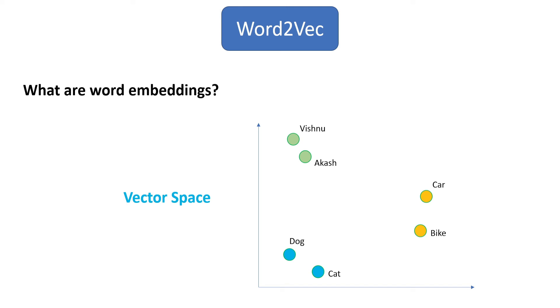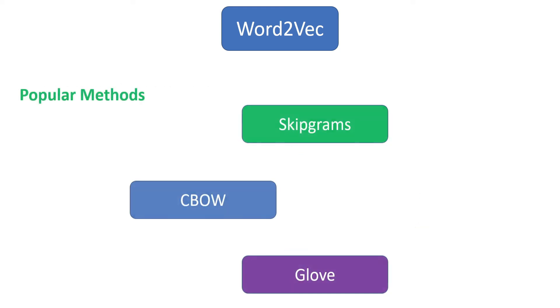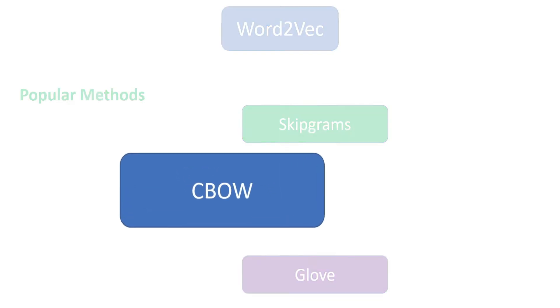But how do we achieve this? Is there any way to achieve this kind of vector representation? Yes, there are three popular methods which we can use. The first one is Continuous Bag of Words, CBOW for short, and the second one is Skip-gram, and the final one is GloVe. In the next video, we are going to talk about Continuous Bag of Words.